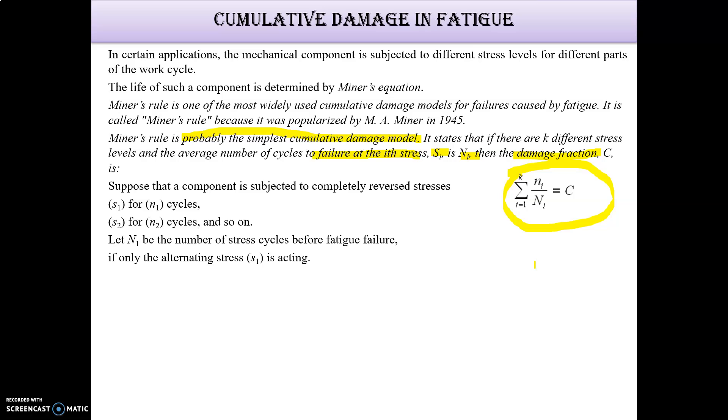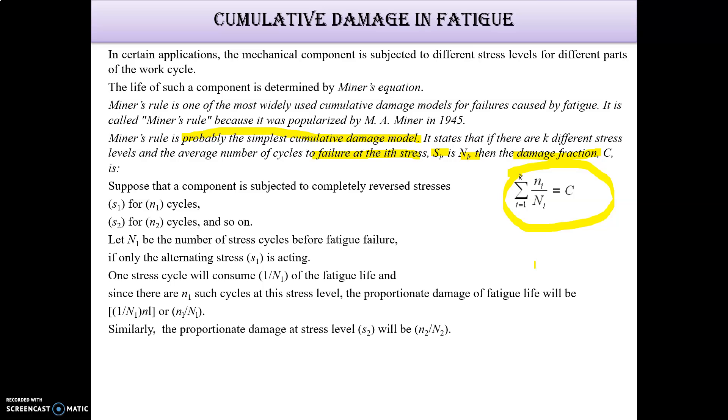If only the alternating stress S1 is acting, then one stress cycle will consume 1 upon N1. Since there are N1 such cycles at this stress level, the proportionate damage of fatigue life will be n1 upon capital N1. Same thing for S2: n2 by N2. Adding this equation, we get the Miner equation.